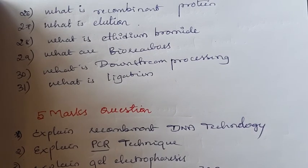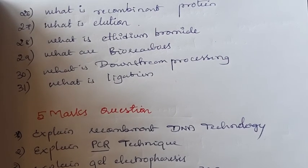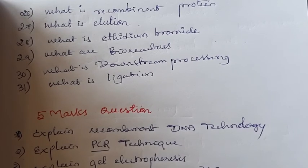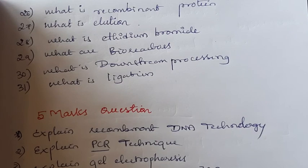Next: what is downstream processing? Downstream processing is the final step of recombinant DNA technology. The product has to be isolated, purified, and processed. The isolation, purification, processing, and marketing steps come under downstream processing. Purification and quantification are also done in the downstream process.